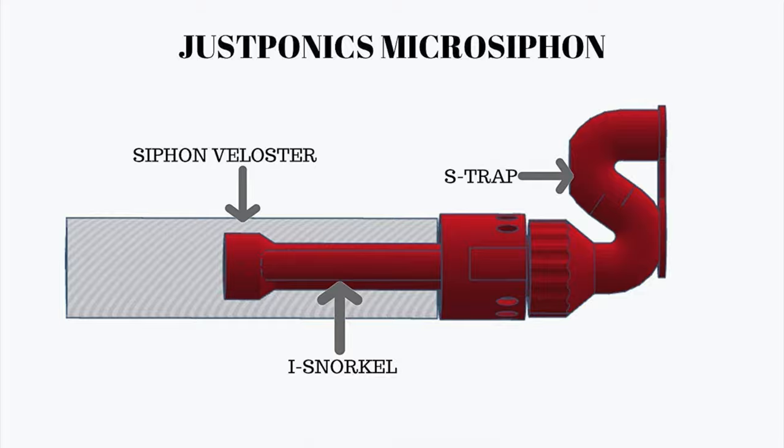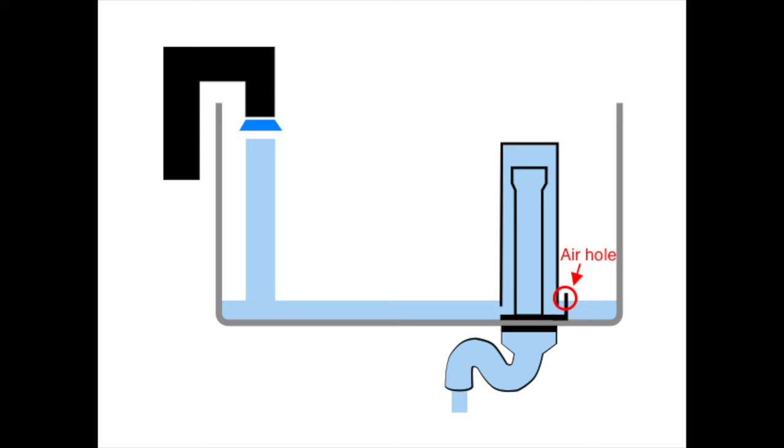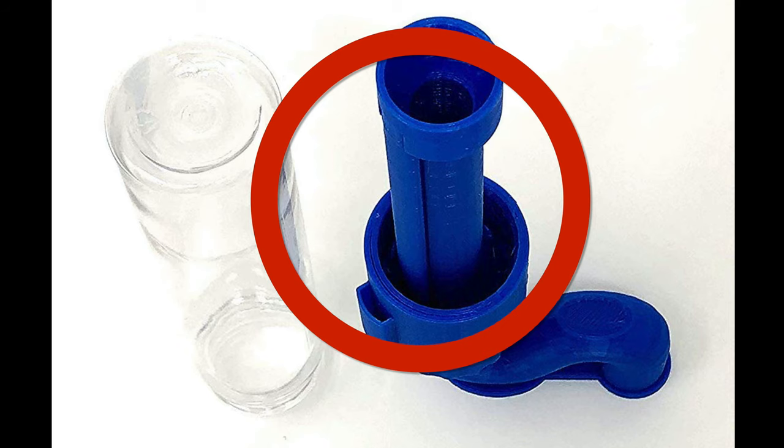This is the ice snorkel. It passes a large volume of air into the riser pipe without interruption to ensure a fail-safe stopping of the siphon.